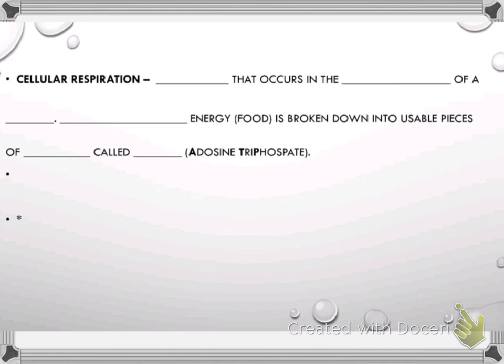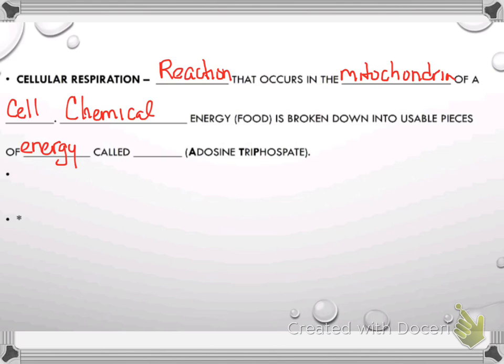All right, then we have cellular respiration. Cellular respiration is a reaction that occurs in the mitochondria, you should have known that, of a cell. It's a chemical equation. It's broken down into usable pieces of energy called ATP. ATP is just an abbreviation for adenosine triphosphate,